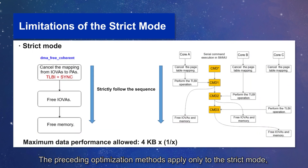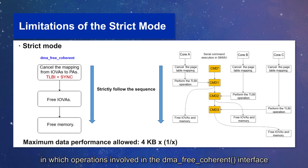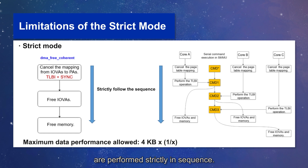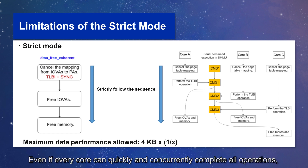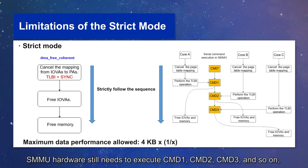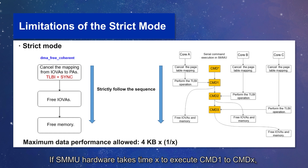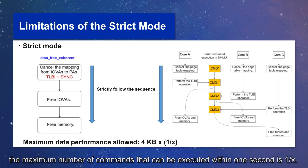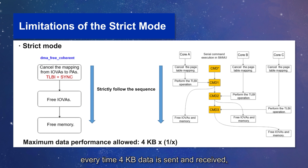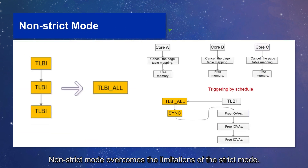The preceding optimization methods apply only to the strict mode, in which operations involved in the DMA-free coherent interface are performed strictly in sequence. Even if every core can quickly and concurrently complete all operations, SMMU hardware still needs to execute commands one by one in serial mode. If SMMU hardware takes time X to execute command 1 through command X, the maximum number of commands that can be executed within one second is 1/X. When each NIC needs to cancel the mapping every time 4KB data is sent and received, the maximum data performance value is 4KB × 1/X.